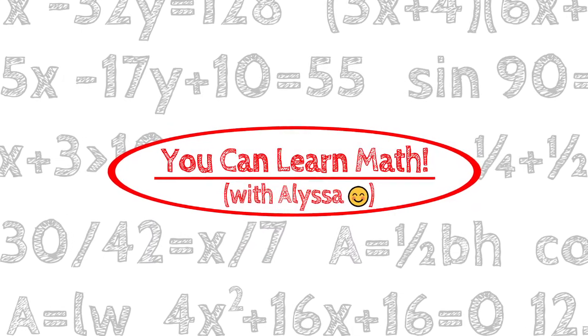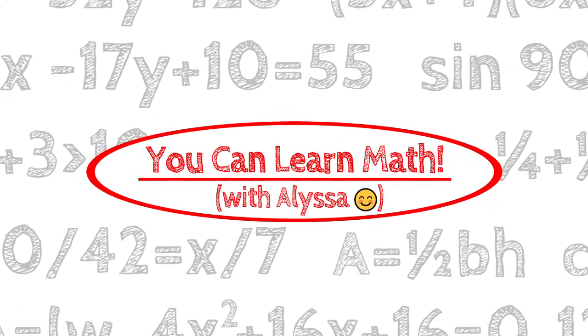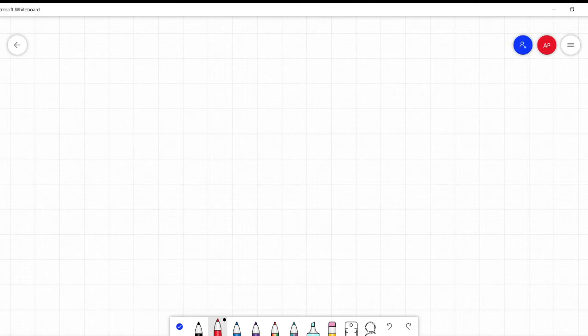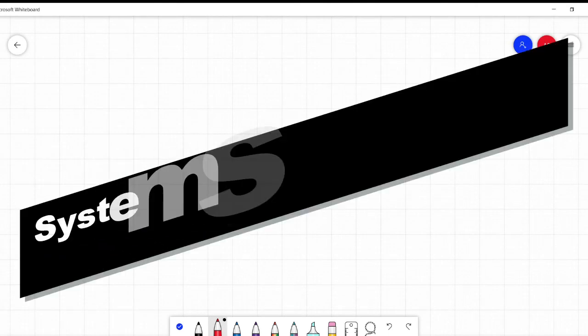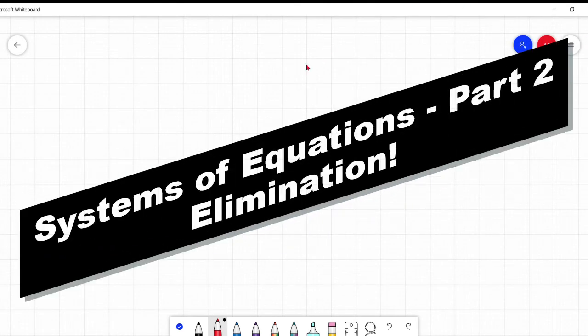Hi everyone, it's Alyssa and welcome to You Can Learn Math. So this lesson is part two on systems of equations. This one is elimination. Part one in this series was on substitution to solve systems of equations. Part three is graphing. Links are in the description below.